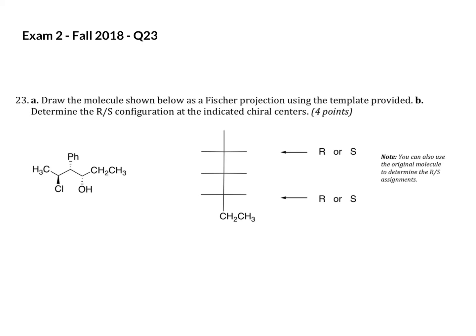Okay, this question has a couple of parts. First we want to convert it to the Fischer projection and then assign a couple of R and S configurations. So you're forced into a template here and I told you to put the CH2CH3 on the bottom.